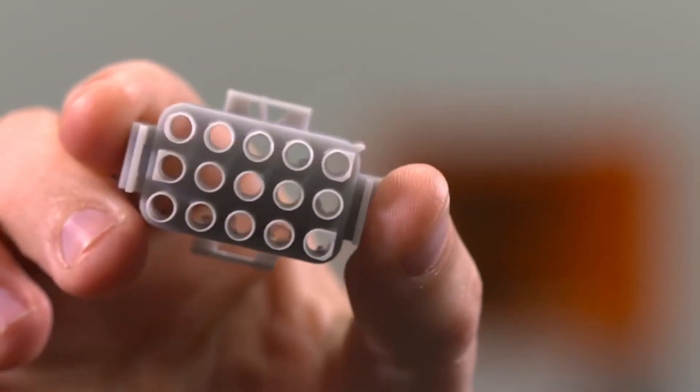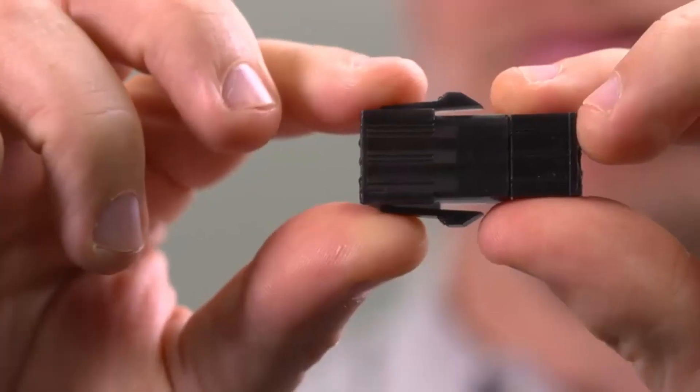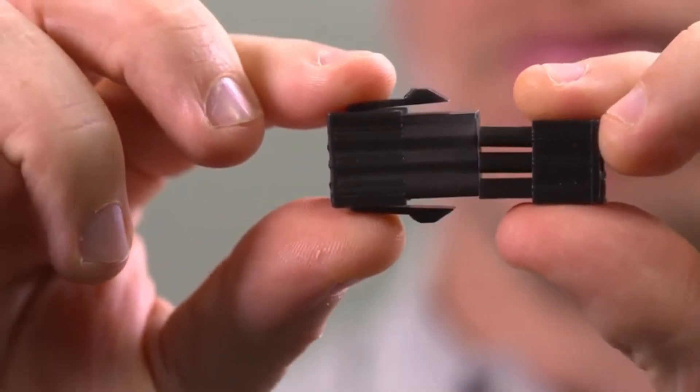For electronics and consumer goods, Figure 4 is ideal for prototyping electronic connectors with durable snap fits, clips and fasteners.